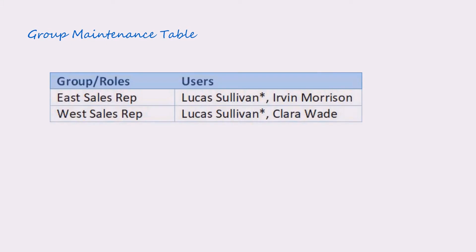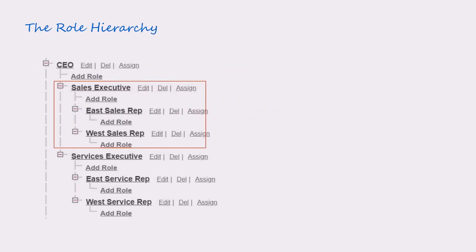For this setup, a group maintenance table is created as shown. From this table you can see there are two rows for both roles in both groups. Since the OWD setup grants access to users up in the role hierarchy, Lucas is also added to both groups.